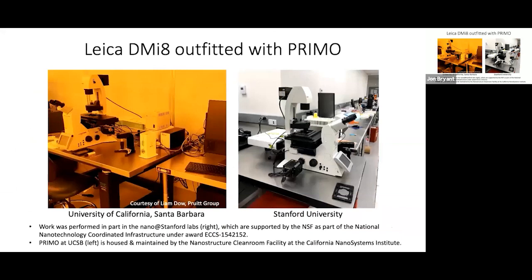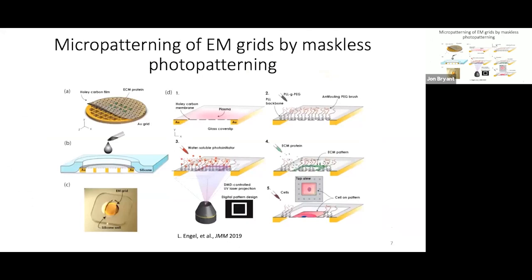Fortunately, we had access to a PRIMO system. Here you can see our PRIMO setup at Stanford and in Beth Pruitt's lab at UC Santa Barbara, and we'll go through in detail how we developed this technology to micropattern EM grids with PRIMO. The ECM micropattern is deposited on the holey carbon film of an EM grid and aligned so that the shapes are centered between the metal grid bars. A silicon stencil is used to immobilize the grid on the glass slide for rinsing and patterning steps.